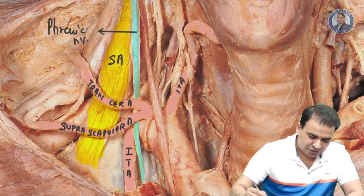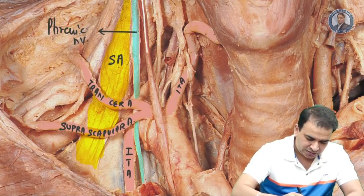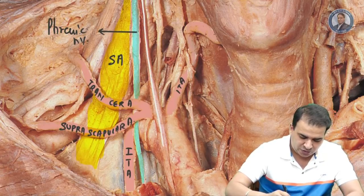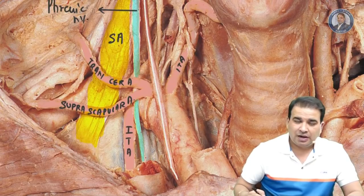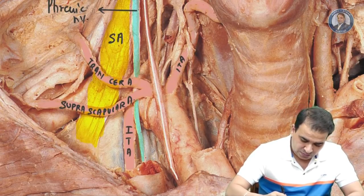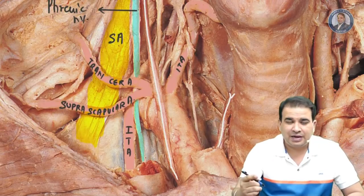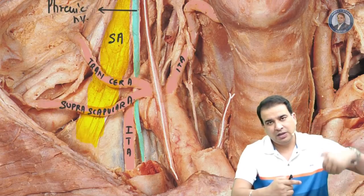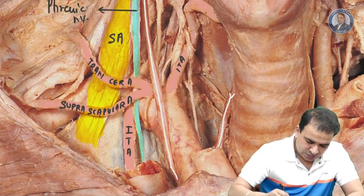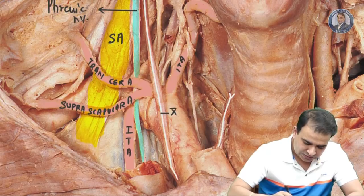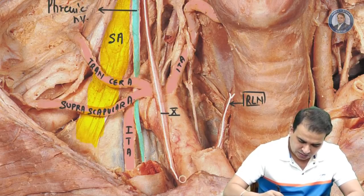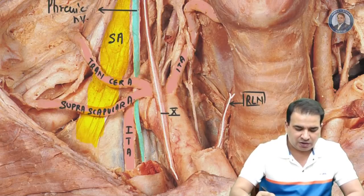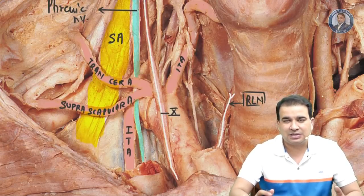Another important nerve is the vagus nerve, seen coming all the way down in front of the subclavian artery. On the right side, the vagus nerve gives off the recurrent laryngeal nerve, which goes below the first part of the subclavian artery and then runs back into the tracheoesophageal groove. On the left side, the recurrent laryngeal nerve goes down into the superior mediastinum. The recurrent laryngeal nerve is the main nerve supply to the laryngeal muscles except the cricothyroid.